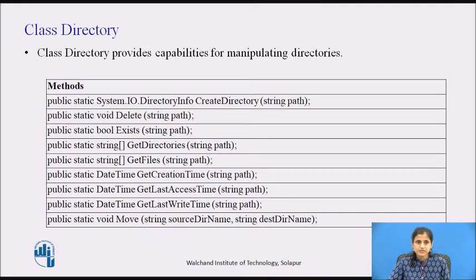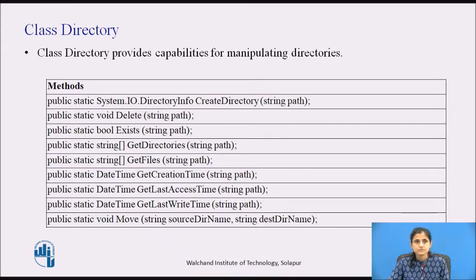The Delete method deletes a specified directory and optionally any subdirectories. It deletes an empty directory from a specified path. An IOException is thrown if the directory specified by path is not empty. The Exists method determines whether the given path refers to an existing directory on disk. The GetDirectories method returns the names of subdirectories in the specified directory. The GetFiles method returns the names of the files in the specified directory.